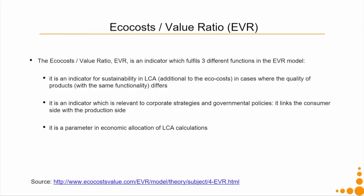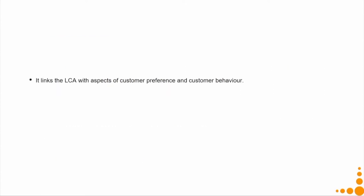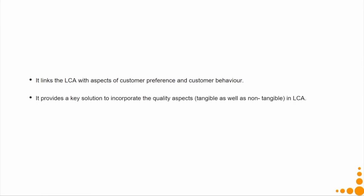The eco-cost value ratio (EVR) is an indicator that fulfills three functions in the EVR model. First, it is an indicator for sustainability in LCA, additional to eco costs, in cases where product quality with the same functionality differs — for example, five running shoes that differ only in quality or associated value. Second, it is relevant to corporate strategies and governmental policies, linking the consumer side with the production side. Third, it is a parameter for economic allocation in LCA calculations, especially for services and products like shoes, jewels, and clothes. EVR is expressed as eco cost per euro instead of eco cost per kg, incorporating quality aspects — both tangible and non-tangible — into LCA.